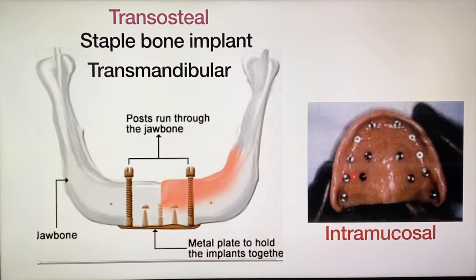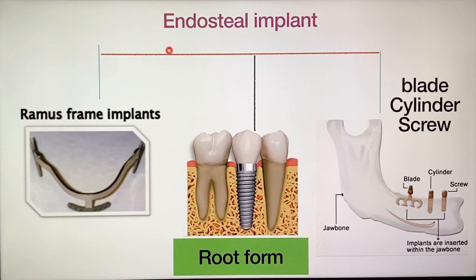This design is discontinued because of the two surgeries involved. Next are intramucosal implants. In these, tacks are placed and they cause injury through the tissues, which is why this design is also not used. The most commonly used design is endosteal implants, which are of three types: root form implants, ramus frame implants, and blade cylindrical and screw form implants.